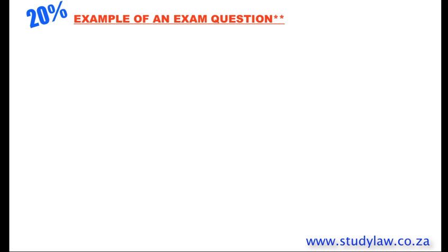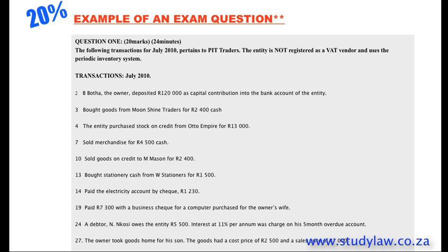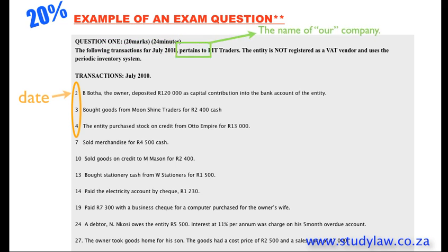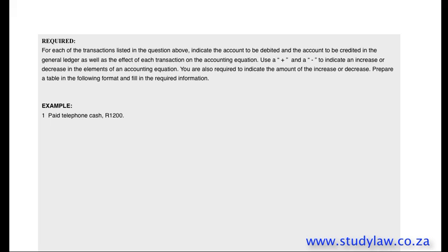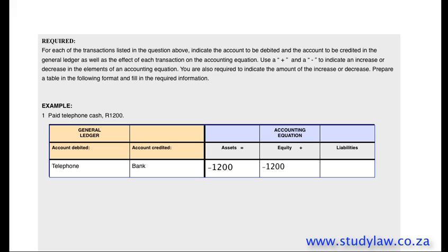Here is an example of an exam question. On the left hand side, we can see that the numbers indicate the date of a transaction. The writing in bold will give us information as to the date and the name of the entity. Underneath each exam question you will find the heading 'Required,' which tells you exactly what you need to do and gives you an example of how to lay out your answer. The example says: Paid Telephone Cash, 1,200 Rand.